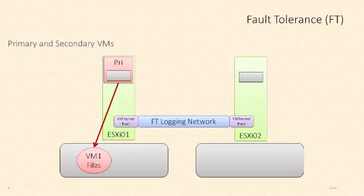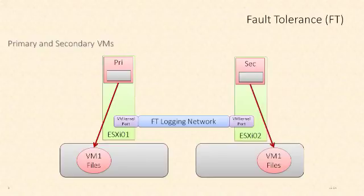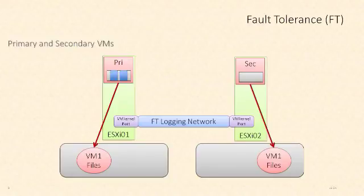Then we enable fault tolerance on that primary virtual machine and a secondary virtual machine is created. As we're configuring fault tolerance, we can choose a data store where a copy of that virtual machine's files will reside. In this case, we've chosen to create that copy on a secondary data store, so now we have a primary and secondary virtual machine and a copy of the data on two different data stores. Changes on the primary VM are copied over to the secondary VM using the fault tolerance logging network to keep those two VMs exactly the same.